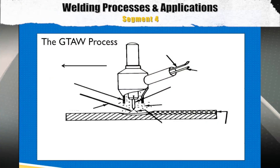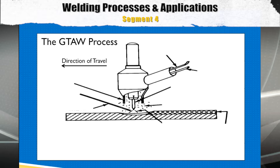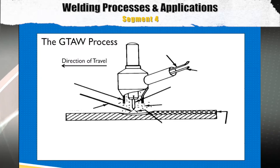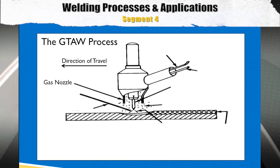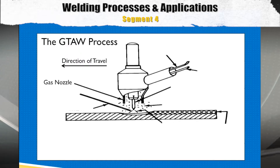To finish up our notes on the GTAW process, here are some detailed variables a welder needs to consider. The first item is the direction of travel, which may vary depending on factors such as welder's comfort, joint accessibility, or welding procedure requirements. The next item, the gas nozzle, is a ceramic cup that will direct the shielding gas to the welding zone. There are many different types and styles of gas nozzles, and selection may depend on factors such as joint design, shielding gas requirements, and the welder's skill level.